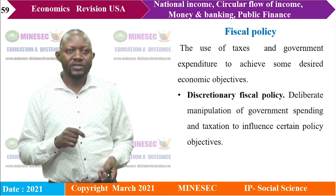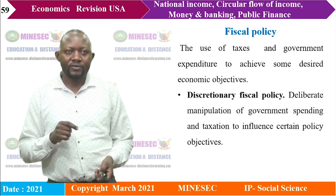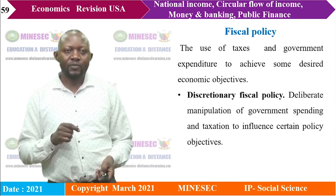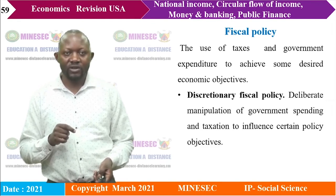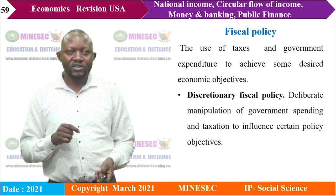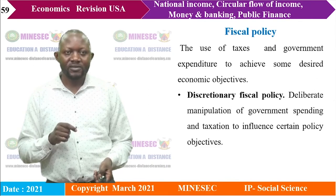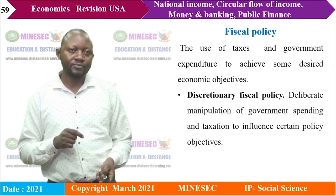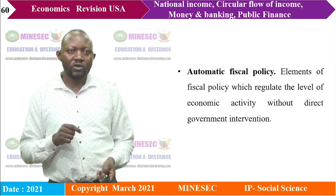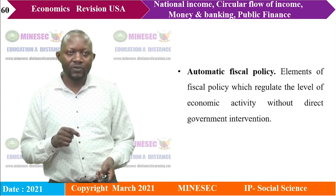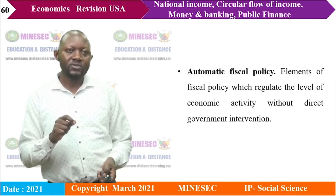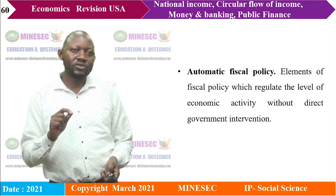Fiscal policy is the use of taxes and government expenditure to achieve desired economic objectives. It is divided into: discretionary fiscal policy — a deliberate manipulation of government spending and taxation to influence policy objectives; and non-discretionary (automatic) fiscal policy — built-in mechanisms in the system that reduce the amplitude of economic fluctuations without direct government intervention, also called automatic stabilizers.